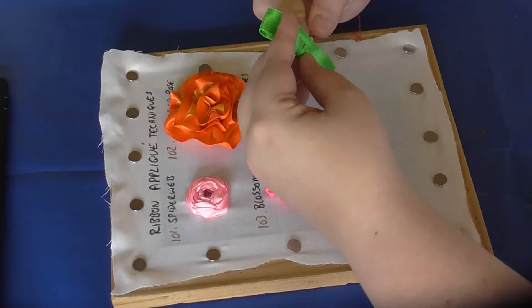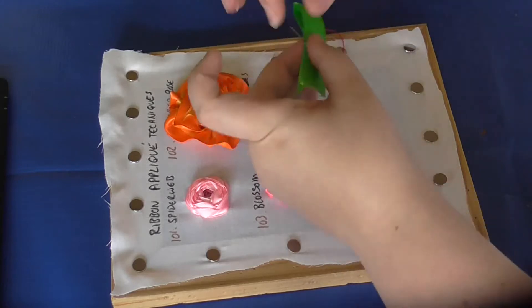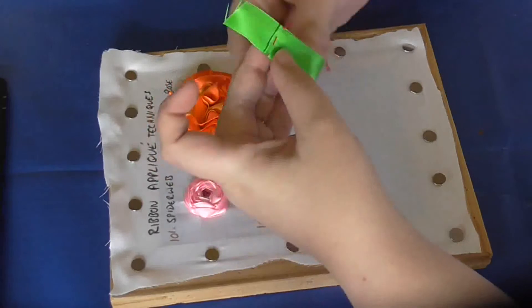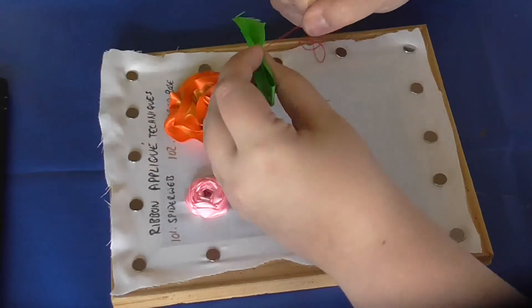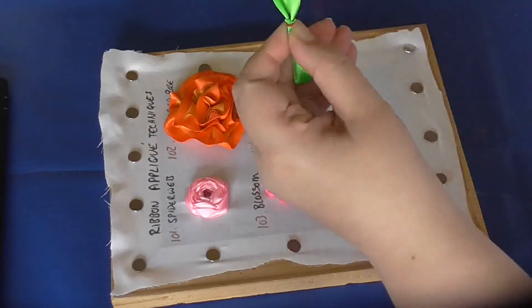Do a running stitch just to hold the layers in place, then pull on that stitch to gather it in and spin around a couple of times to hold it.